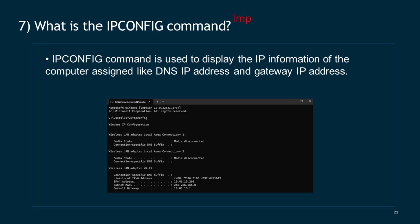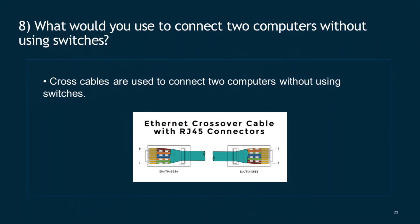Question 7: What is the ipconfig command? The ipconfig command is used to display the IP information of the computer, such as DNS IP address and gateway IP address. Question 8: What would you use to connect two computers without using switches? Cross cables are used to connect two computers without using switches.